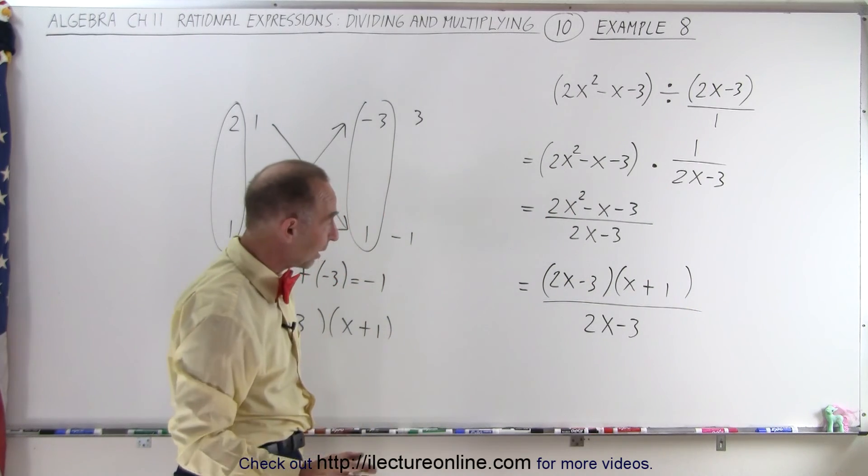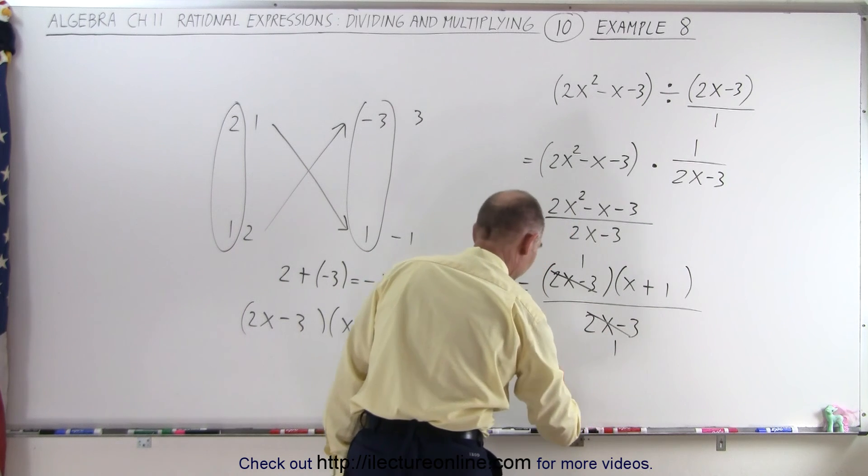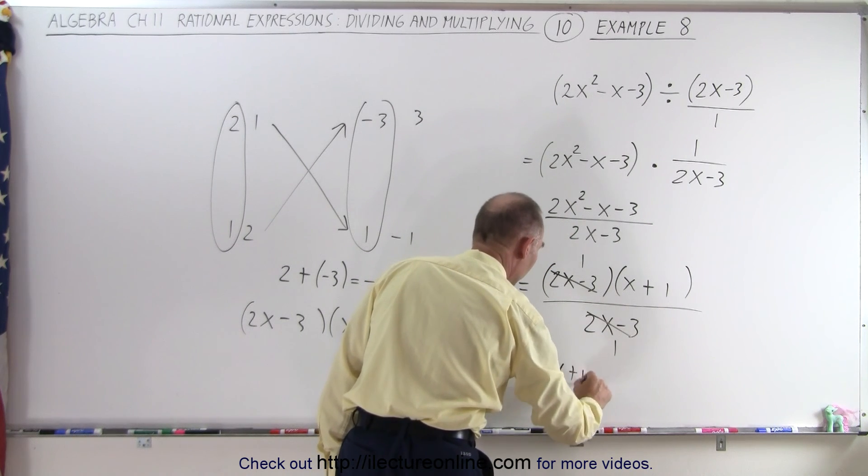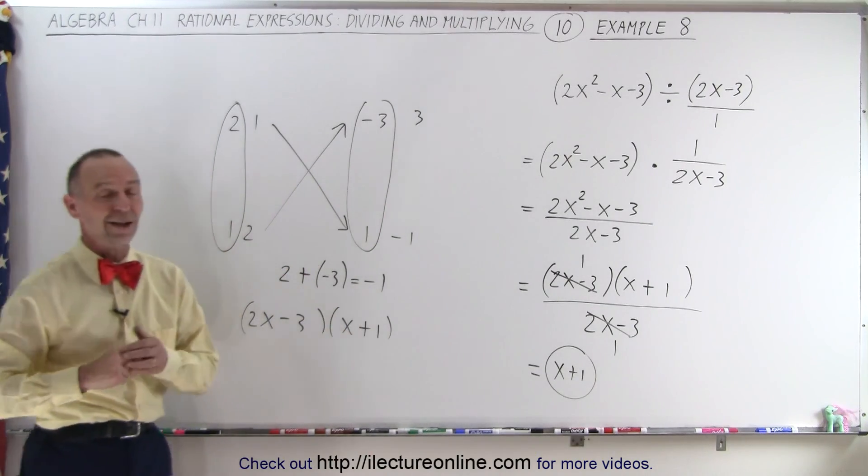And now we can see that the 2x minus 3 cancels out, and we're left with an x plus 1 as our final result. And that is how that's done.